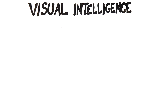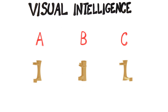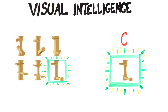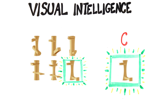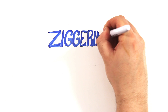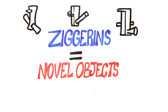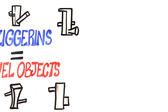Okay, now which of these three did you already see? If you guessed C, you're correct. This task used zigurins — novel objects that don't exist in real life — in order to accurately test you.